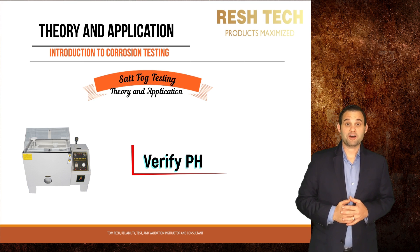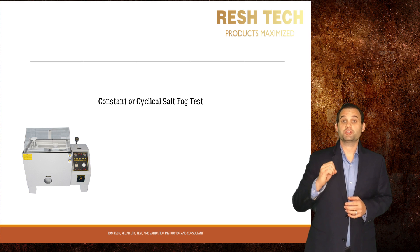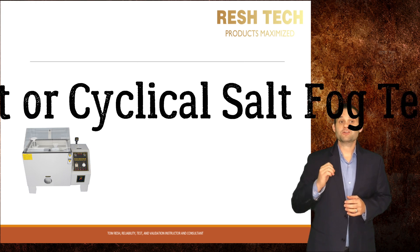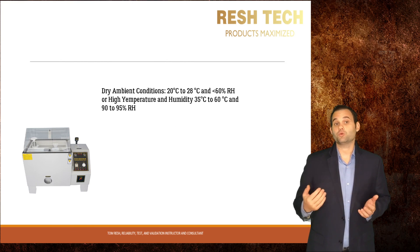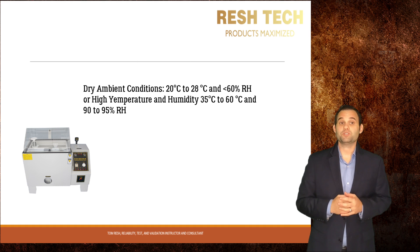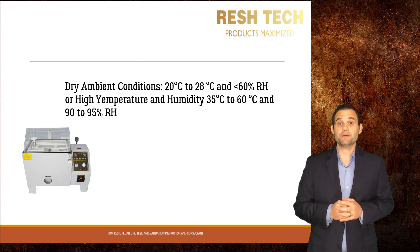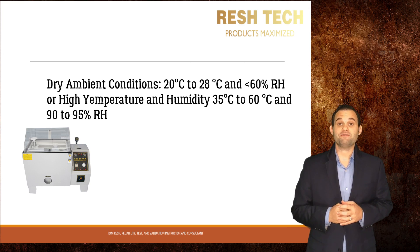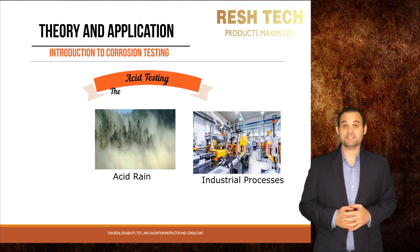Salt fog and salt spray tests can be constant, with a constant temperature and exposure to salt atmosphere, or the test can be cyclical. Cyclical tests are typically either a dry ambient condition at 20 to 28 degrees Celsius and less than 60% relative humidity, or high temperature and high humidity with a temperature range of 35 to 60 degrees Celsius and 90 to 95% relative humidity.